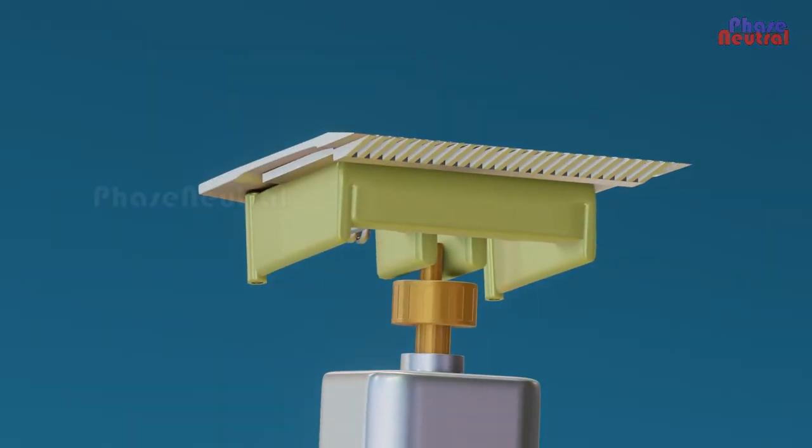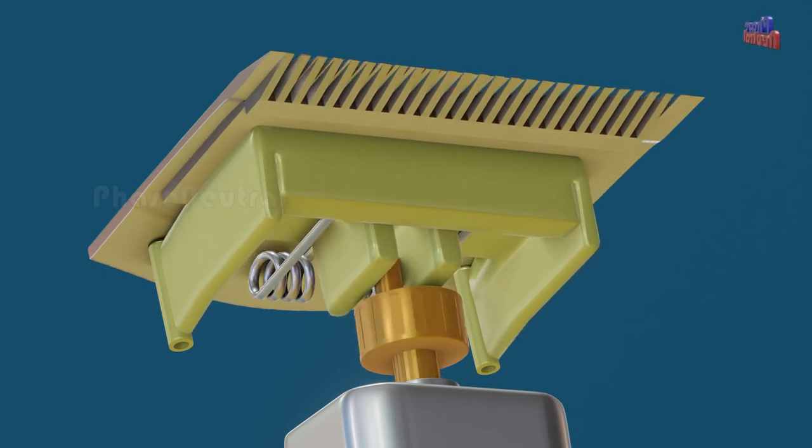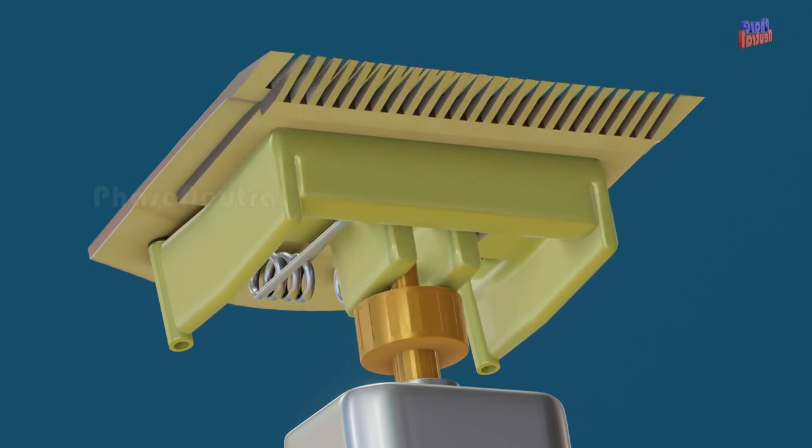In this same way, the motor shaft moves the lower blade assembly to the left and right direction, and the spring helps to pull back the blade to the center point.